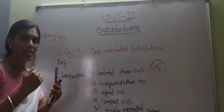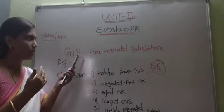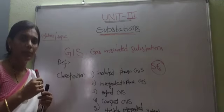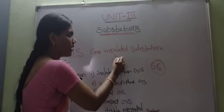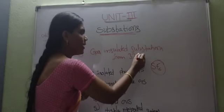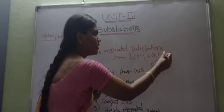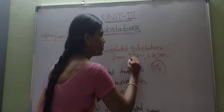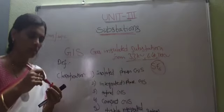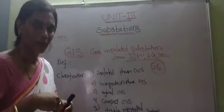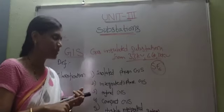And how much voltage extent are we using this gas up to? It is starting from 33 kV, 66 kV, 110 kV, 132 kV. So these are used for high voltage, higher voltage, extra high voltage levels.